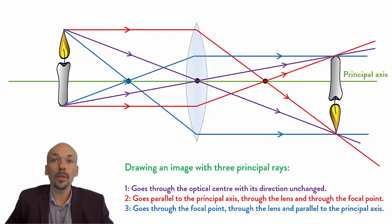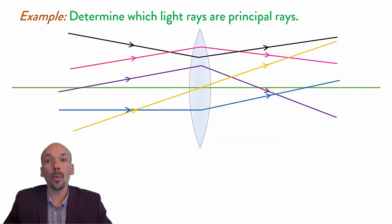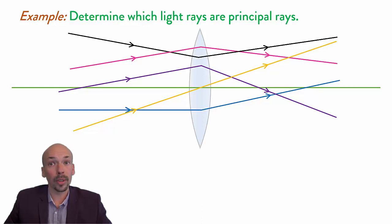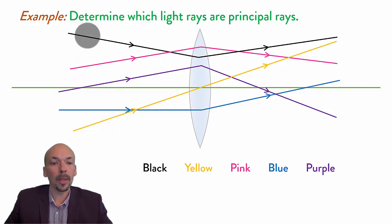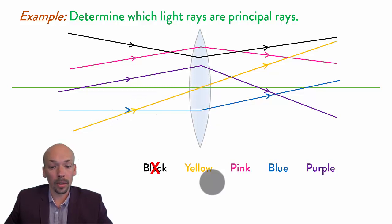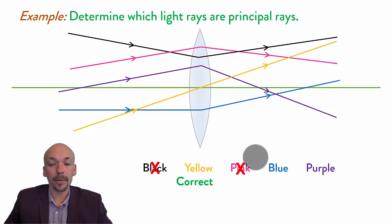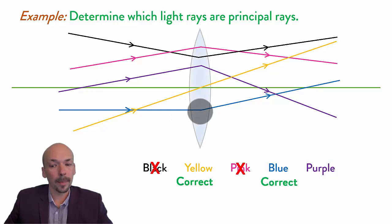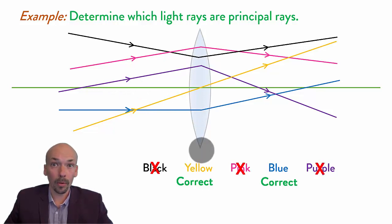There will now be three example questions to check if you understood. First question: determine which light rays are principal rays. The black one does not go through the middle, doesn't come in parallel, and doesn't come out parallel — so it's not a principal ray. The yellow one goes through the middle with direction unchanged, so it is a principal ray. The pink one doesn't come in or out parallel, so it's not. The blue one comes in parallel, so it is a principal ray. The purple one doesn't come in or leave parallel, so it's not. Yellow and blue are both principal rays.